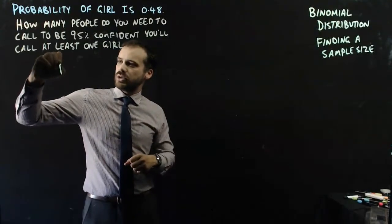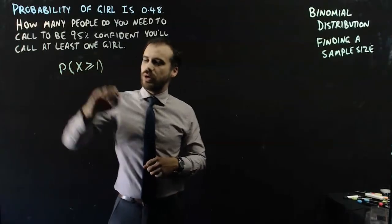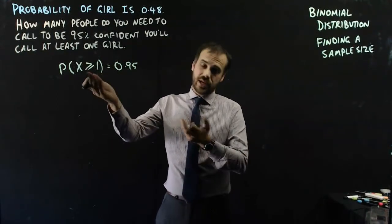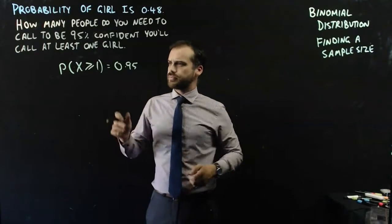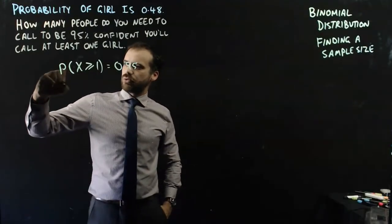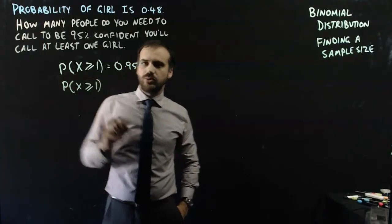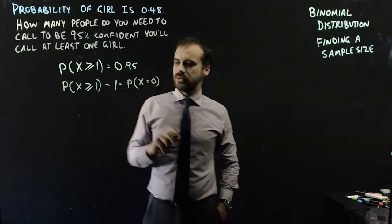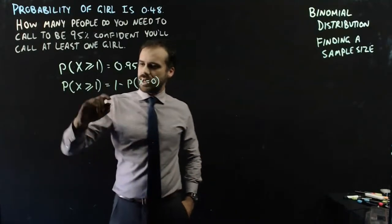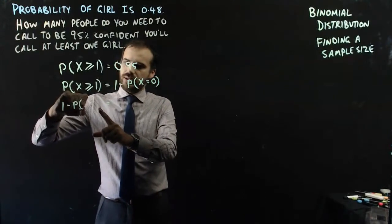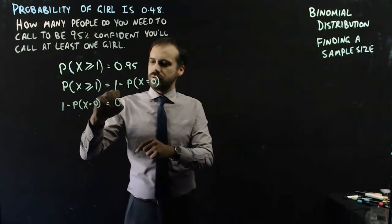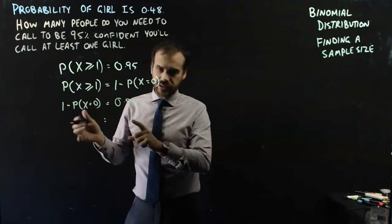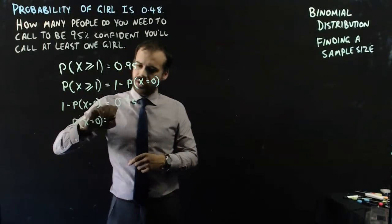We're talking about the probability that x is greater than or equal to 1 is equal to 0.95. Do we want more than one success, or exactly one success? We can say that the probability that x is greater than or equal to 1 is the same as 1 minus the probability that x is equal to 0. So 1 minus P(x=0) = 0.95, which means P(x=0) = 0.05.